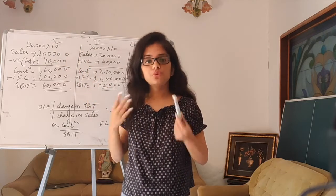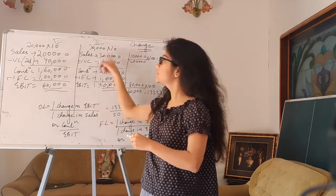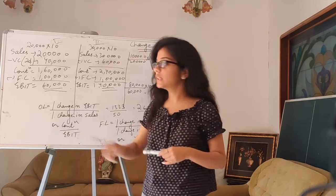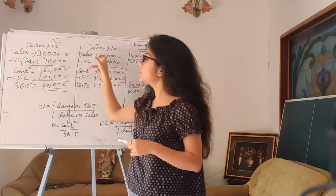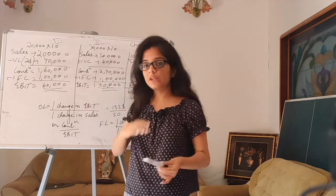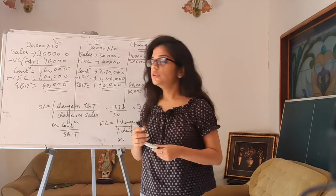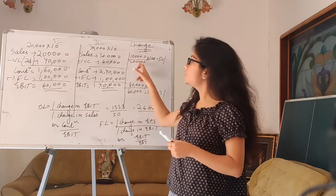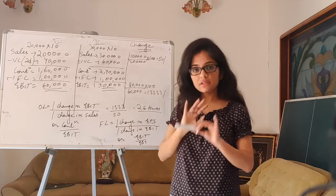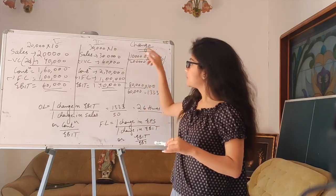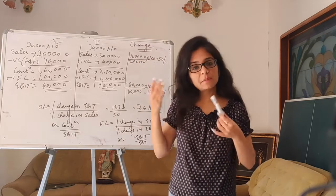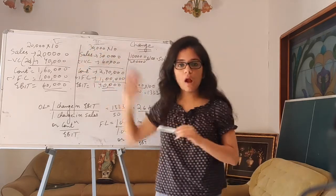First, how much was the sales? 2 lakh. Now how much is the sales? 3 lakh. To calculate the percentage change: the difference is 1 lakh, divided by the base value of 2 lakh, multiplied by 100, which comes out to 50%. This means my sales has increased by 50%.